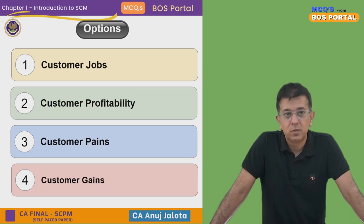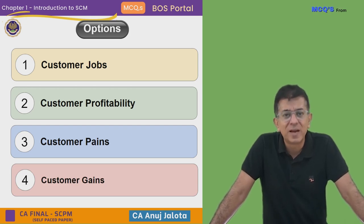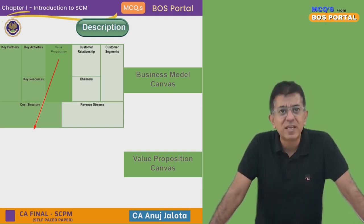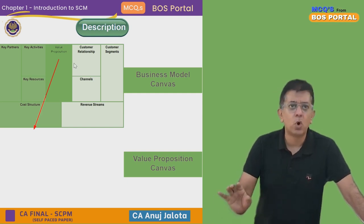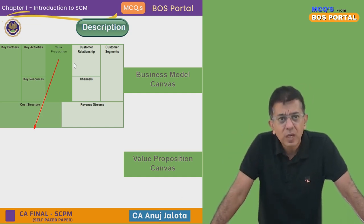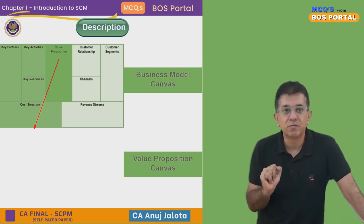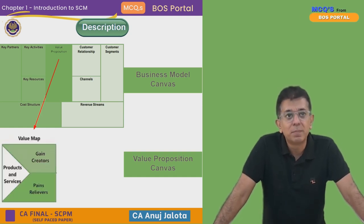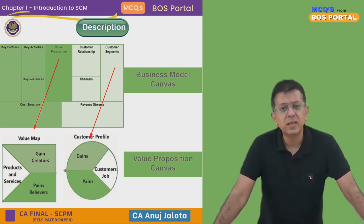Before giving the answer, you should know what the Value Proposition Canvas is. On top you have the Business Model Canvas, which has nine parts. Out of those nine parts, two get elaborated further — one in the center, which is the value proposition, and the other is the customer segment.